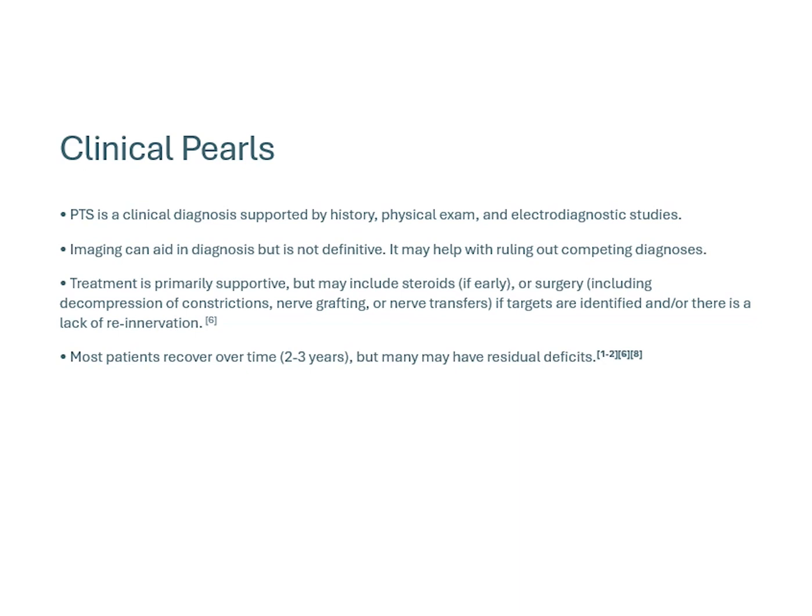Clinical pearls: Parsonage-Turner syndrome is largely a clinical diagnosis supported by history, exam, and most certainly electrodiagnostic studies, which help identify the patchy distribution and rule out competing diagnoses like cervical radiculopathy and potentially motor neuron disease. Imaging can aid with the diagnosis but is not definitive. Treatment is primarily supportive, may include early steroids if caught early enough, and potentially surgery down the line if hourglass-like constrictions are identified — amenable to decompression, nerve grafting, or nerve transfers if targets are identified or if there's a lack of re-innervation by the six- to nine-month mark. Most patients do recover over time, though it takes a long time — we counsel patients to allow two to three years before closing the window, but many do end up with some subtle residual deficits.